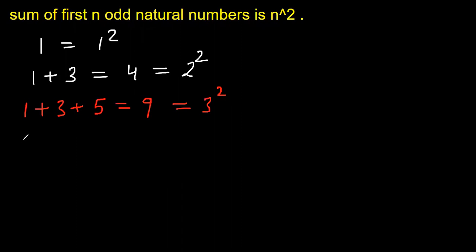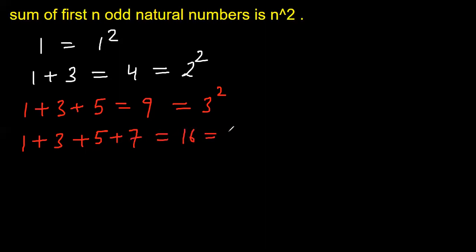Take the first four odd natural numbers: 1, 3, 5, 7. The sum is 16, and this is the same as 4 squared.